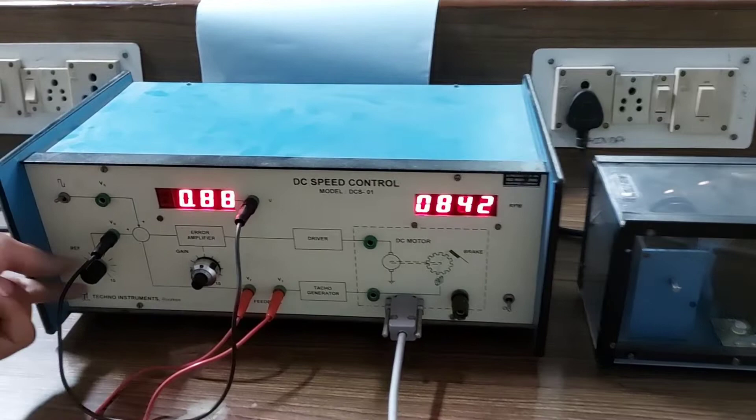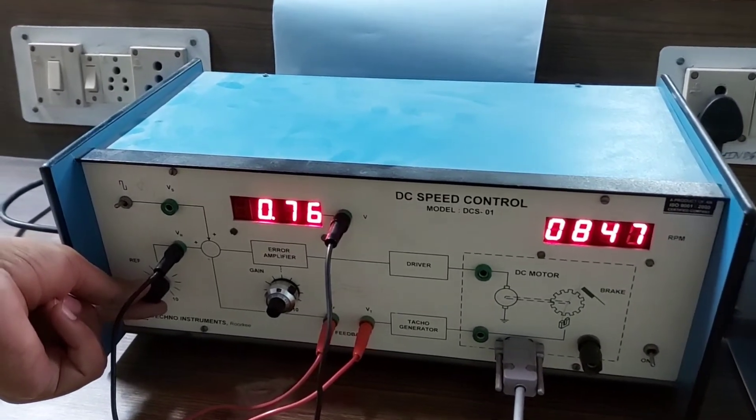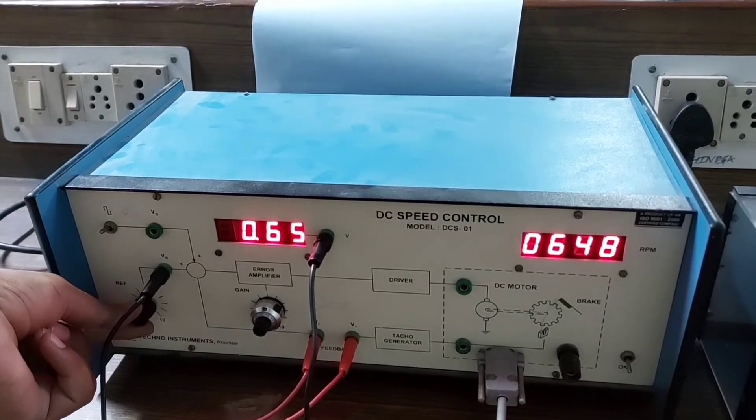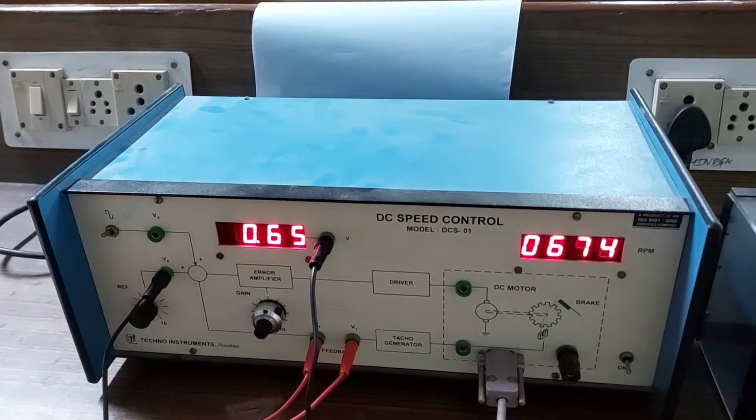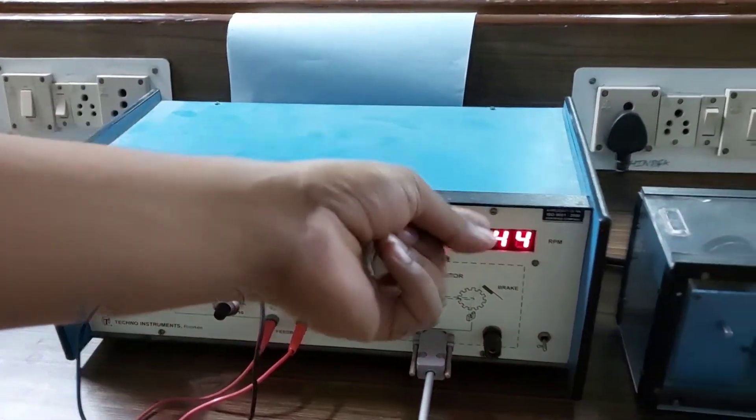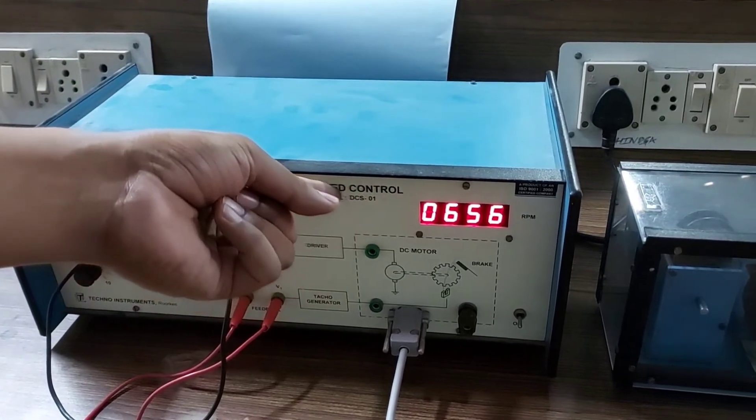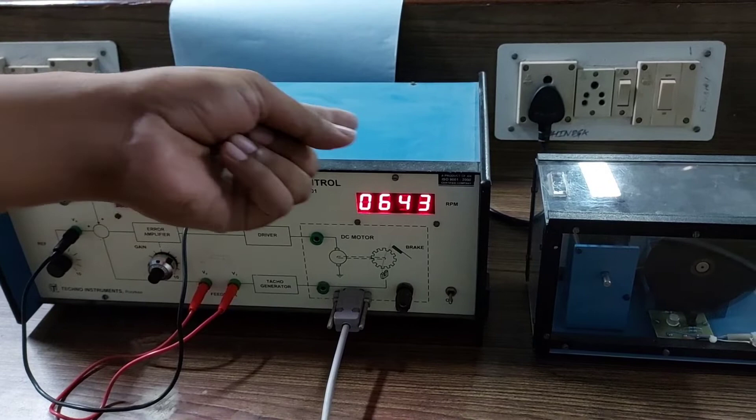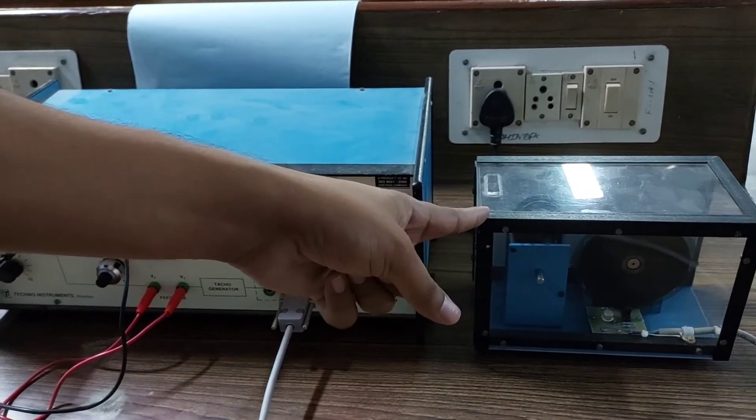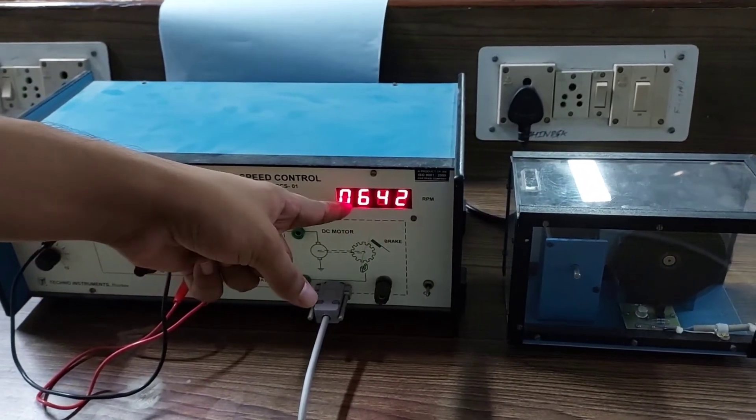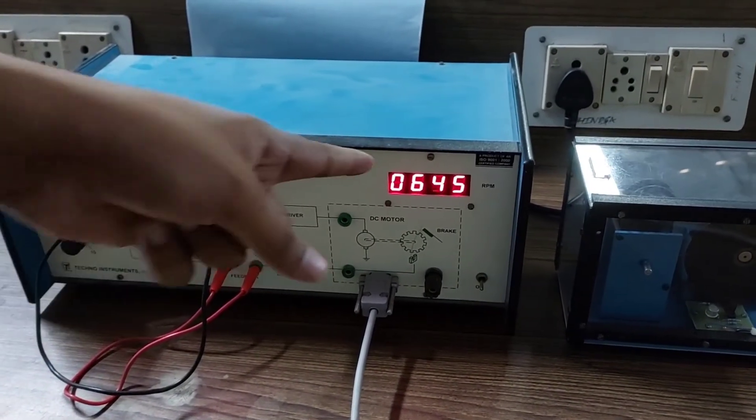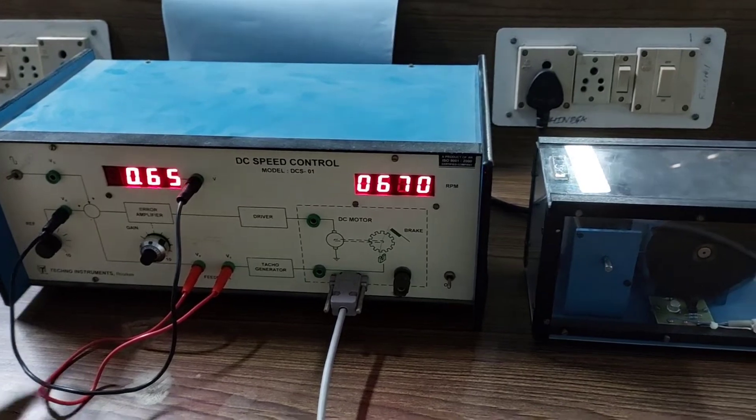If we increase the reference voltage, the corresponding RPM changes and this control unit will control that motor to that point. At 642 RPM from the previous one, if we further increase the reference voltage